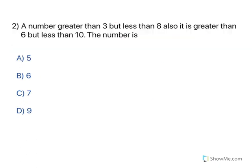Moving to the next one. There is a number greater than 3 but less than 8. Greater than 3 means you cannot take 3, so the candidates are 4, 5, 6, 7. Less than 8 means you cannot take 8. So these numbers — 4, 5, 6, 7 — satisfy the first condition.